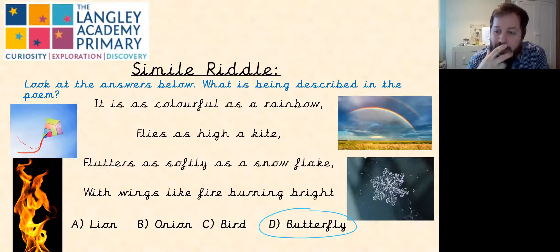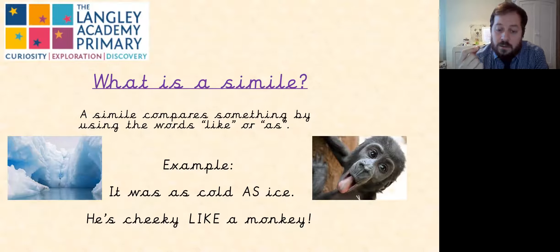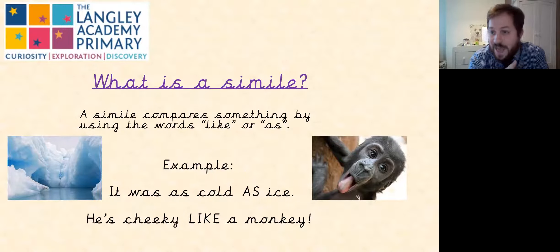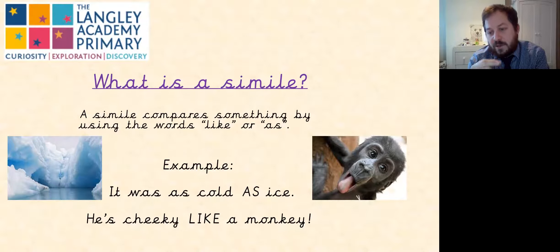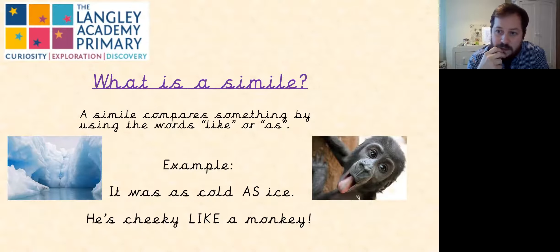But sometimes we need context in order for them to make sense. So what is a simile? A simile compares something by using the words 'like' or 'as'. Examples are: it was as cold as ice — we know ice is cold, so when you compare how cold something is to ice, people instantly have an idea of what you mean. He's cheeky like a monkey — we know that monkeys can be very silly and do silly things, therefore we understand what is meant by that.